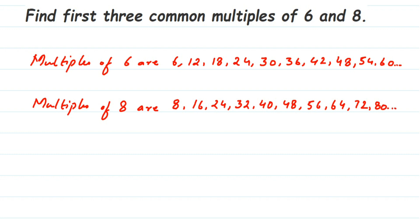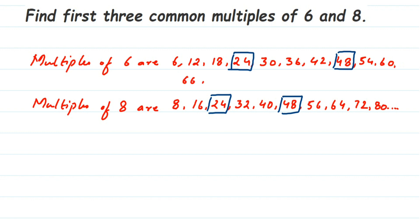Now let's find the common multiples — values present in both lists. Looking at the lists, we don't have six, twelve, or eighteen in the multiples of eight, but we do have twenty-four, which is the first common multiple. The next one is forty-eight. That gives us two so far. Since I stopped the multiples of six at sixty, I need to extend further: six elevens are sixty-six, six twelves are seventy-two. Now seventy-two appears in the multiples of eight as well, so that's our third common multiple.